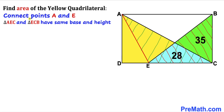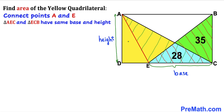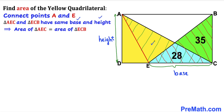Also consider triangle E, C, B. We can see that both of these triangles share the common base EC, and the height for both triangles is also the same. Since both triangles have the same base and height, the area of triangle AEC equals the area of triangle ECB.